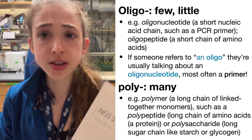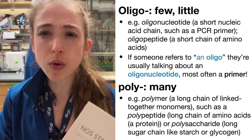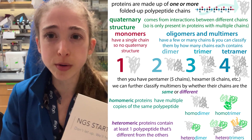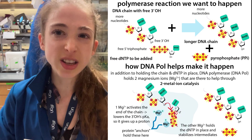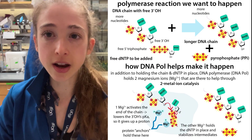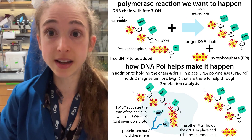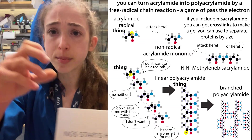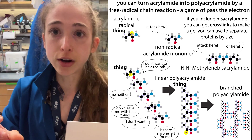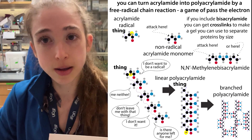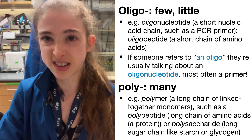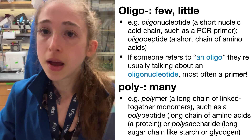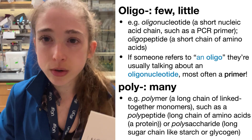You'll also see oligo and poly used in various other cases. Oligomerization is basically where multiple copies of, say, proteins kind of link up and work together. We can talk about polymerization — this could be talking about the process of putting all those DNA letters together by DNA polymerase, or the piecing together of acrylamide to give you your polyacrylamide gel. In all these cases, we're using poly because there's many things. So poly means many, oligo means few or little.